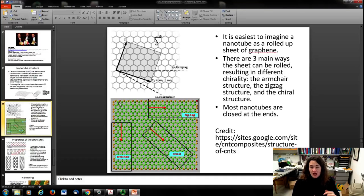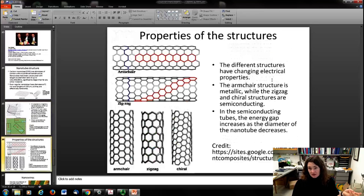The different structures—either armchair, zigzag, or chiral—change the electrical properties of the nanotubes.